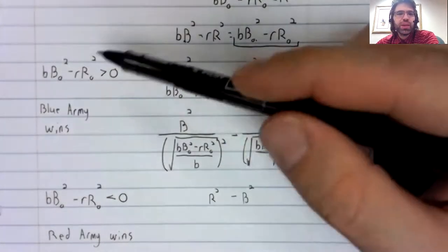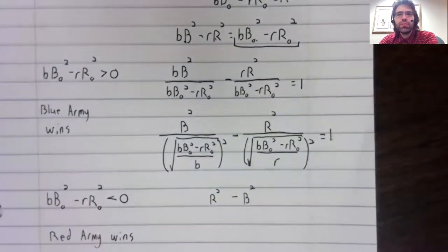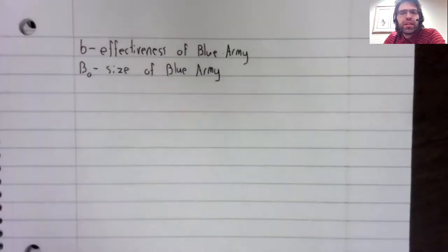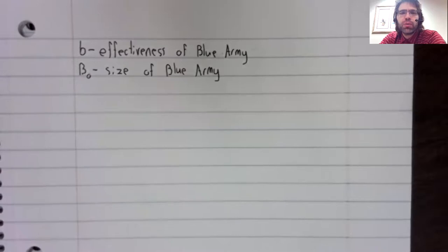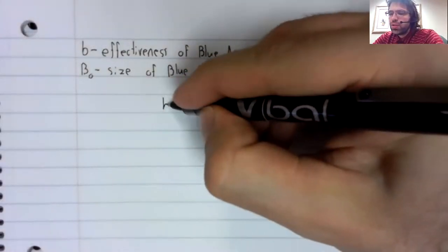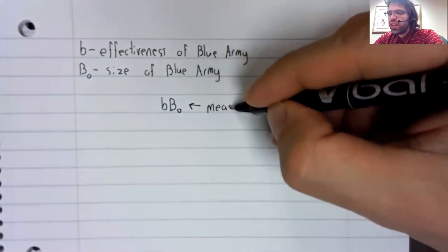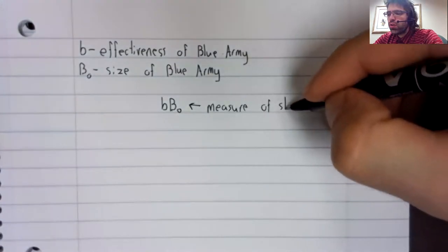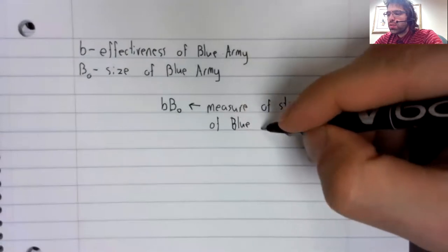Let's try to make a little sense of this before we end this video. So remember that B is the effectiveness of soldiers in blue army. It measures things like how well trained blue army is and how well equipped blue army is. And B sub zero is the size of the blue army at the beginning of the combat.